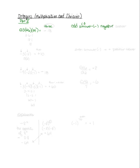Then we just multiply the plain numbers. Would you agree that three is an odd number? Therefore we're going to get a negative answer. Then we just do three times six times one: three times six is eighteen, times one gives me eighteen. So our answer is going to be negative eighteen. Our job is to figure out what the sign is, and then multiply the plain numbers.